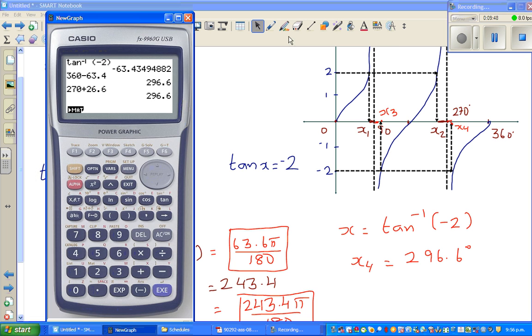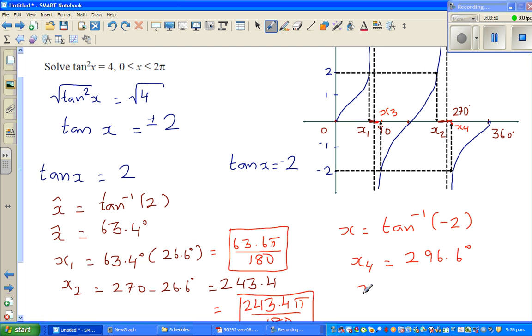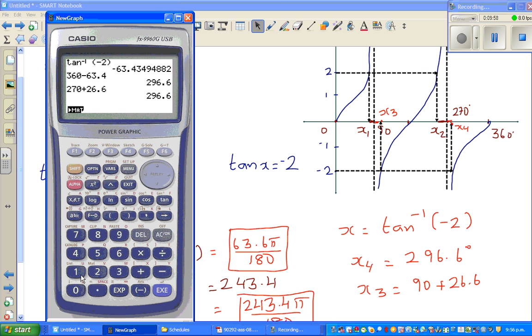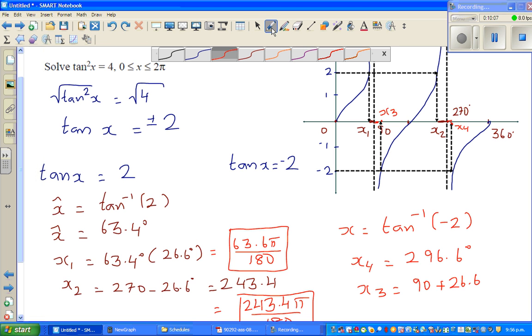So this is 270 plus 26.6, and the other angle, I'm making a guess, x3 would be 90 plus 26.6. So 90 plus 26.6 degrees, it is 116.6 degrees.